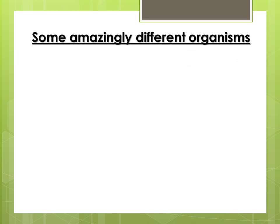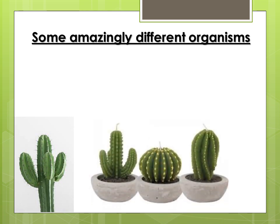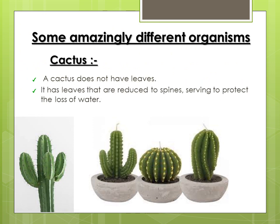Now let us learn about some amazingly different organisms. Let us begin with the cactus. As we can see, a cactus does not have leaves — it has leaves that are reduced to spines, which serves to protect the loss of water. The cactus has a fleshy stem that helps it make its food and store water.